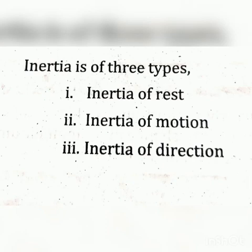Next, we have learnt about inertia. Let me define what is inertia. The inherent property of a body to resist any change in its state of rest or the state of uniform motion unless it is influenced upon by an external unbalanced force is known as inertia. There are three types of inertia: inertia of rest, inertia of motion, and inertia of direction.